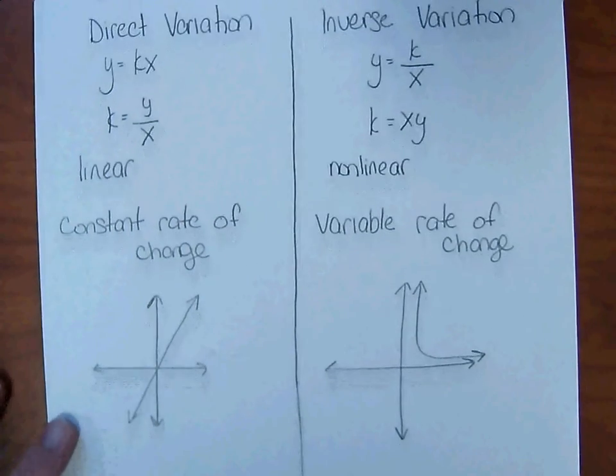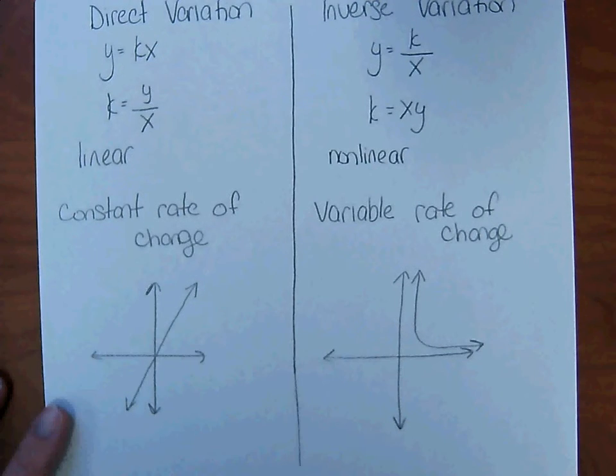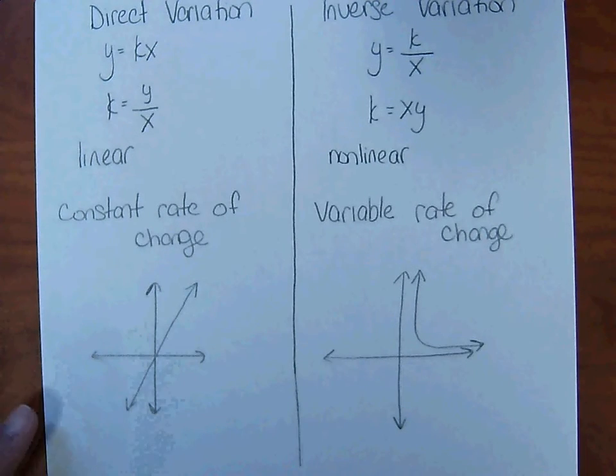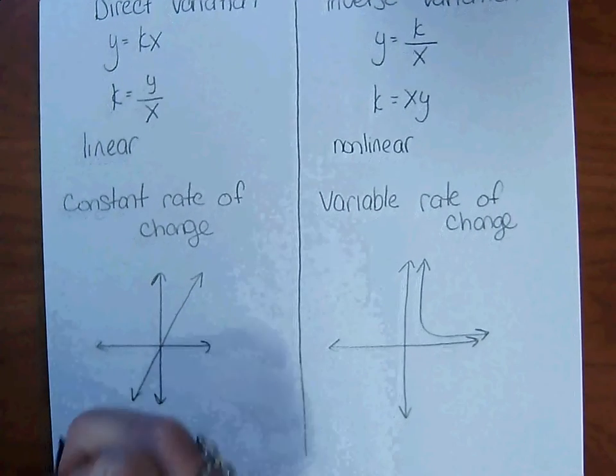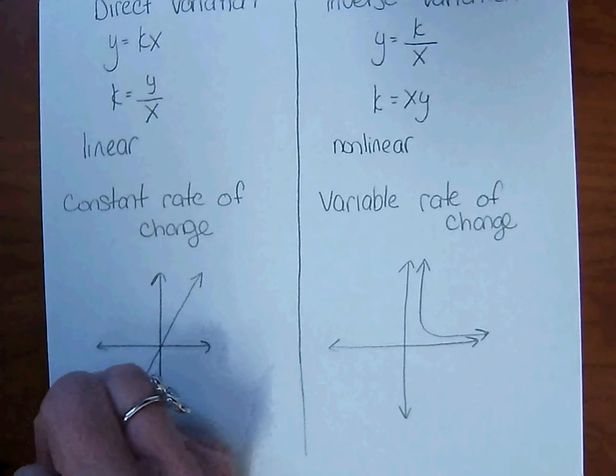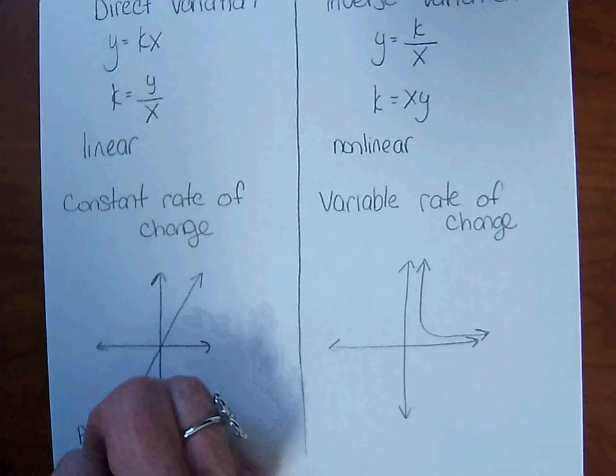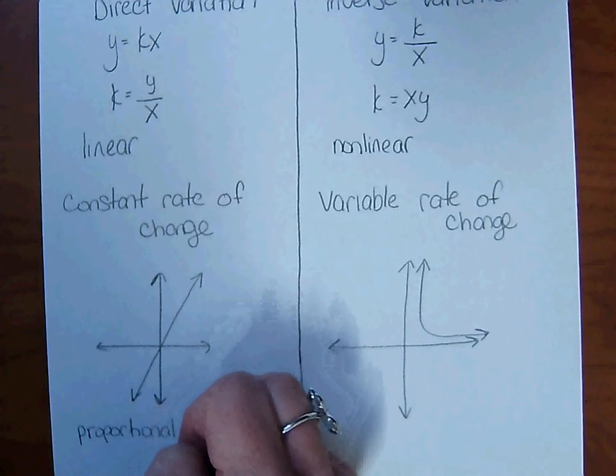So looking back at direct variation, since direct variation is a straight line through the origin, direct variation is also a proportional relationship.